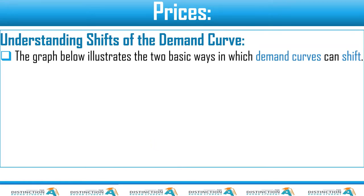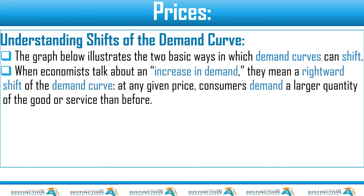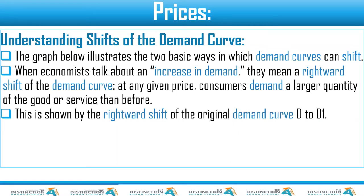The graph I'm going to show you illustrates the two basic ways in which demand curves can shift, which you already know from the introduction. When economists talk about increasing demand, they mean a rightward shift of the demand curve — not a movement along the demand curve. At any given price, consumers demand a larger quantity of the good or service than before. This has nothing to do with price. This is shown by a rightward shift of the original demand curve, say from DD to D1.